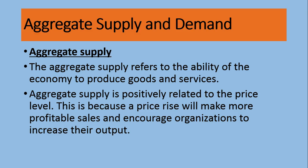Aggregate supply is positively related with price. As the price increases, producers will try to produce more and sell more to earn more. A price rise makes sales more profitable and encourages organizations to increase output. The more prices go up, the more they will be producing, because they know this price increase will not last for long, so they grab the market share while they can.